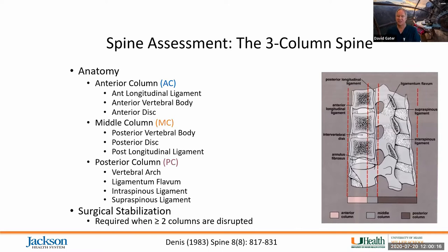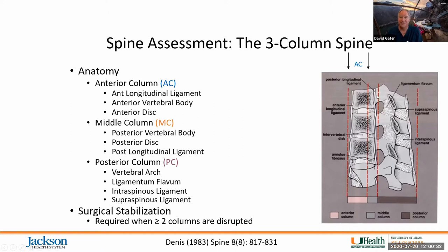We were talking about the assessment of the three-column spine, which was put forward in the early 1980s by Dennis. It described components of the anterior column — including the anterior longitudinal ligament, the anterior vertebrae, and the anterior discs — and the middle column, which includes the posterior vertebral bodies, the posterior discs, and the posterior longitudinal ligament.